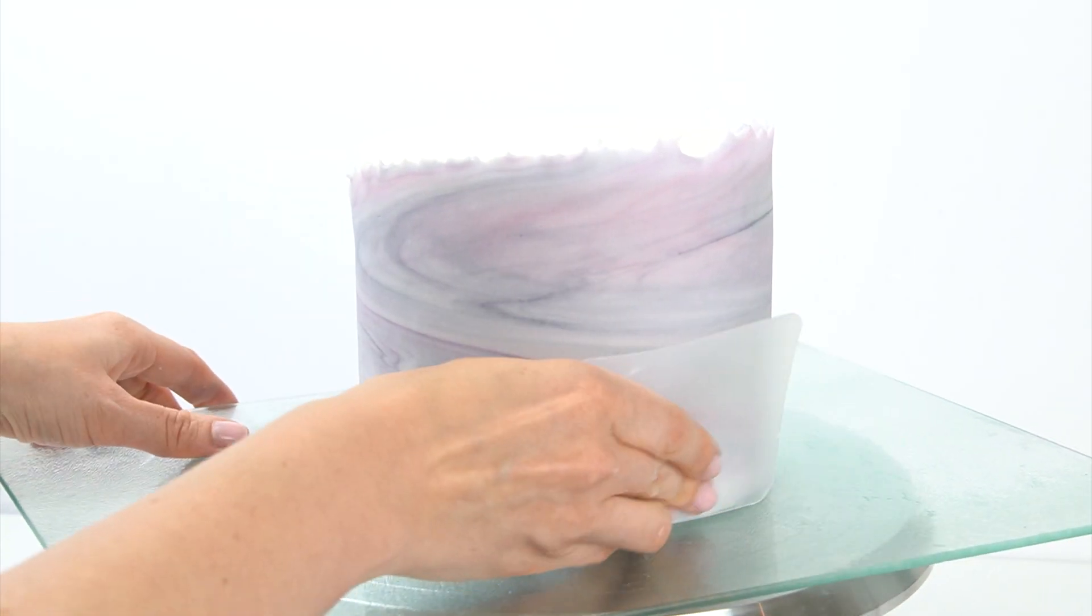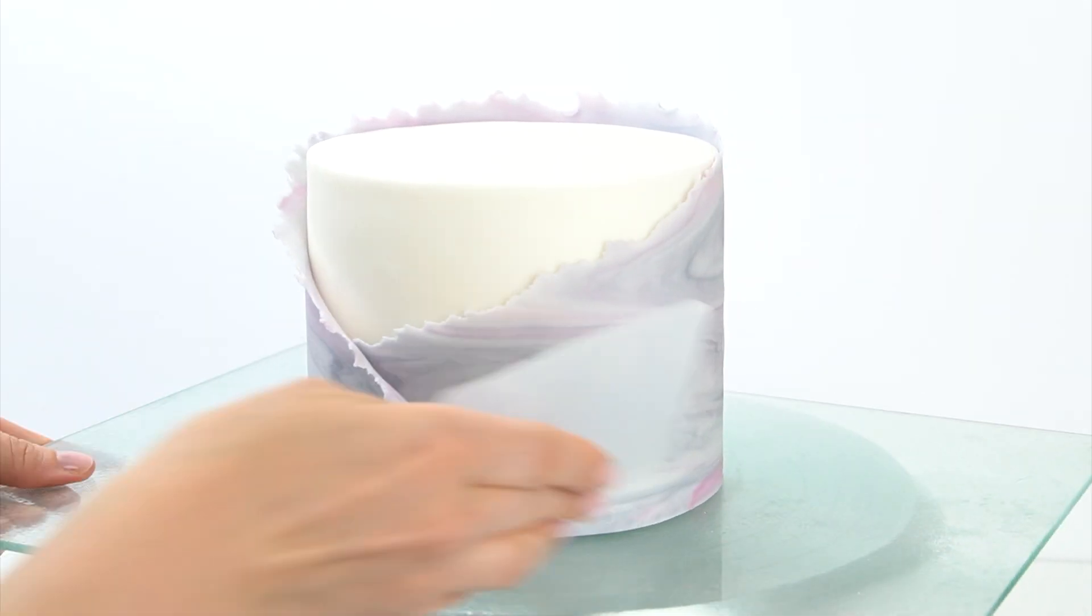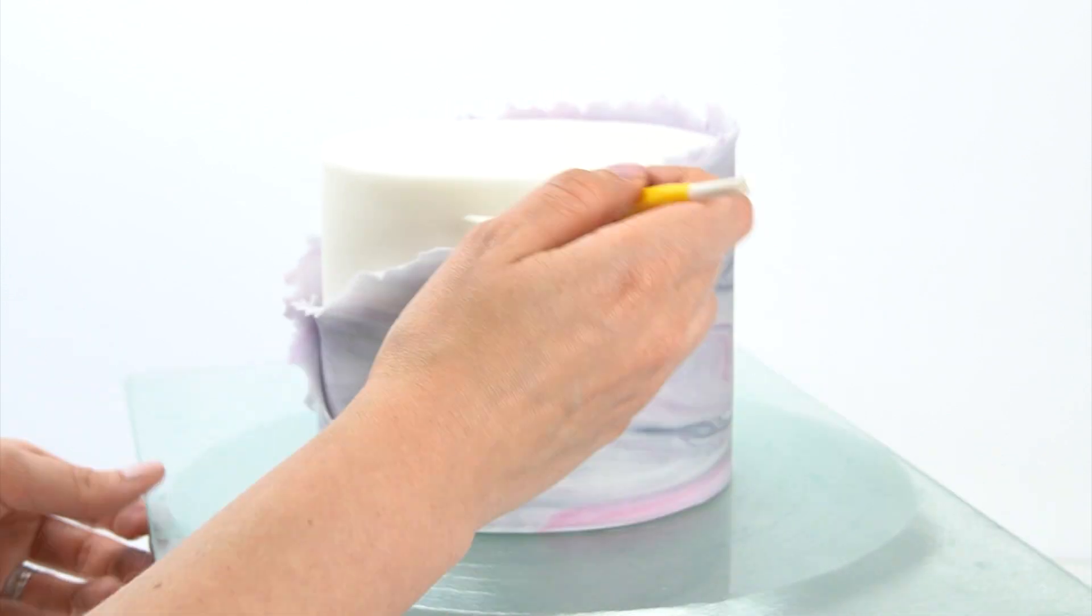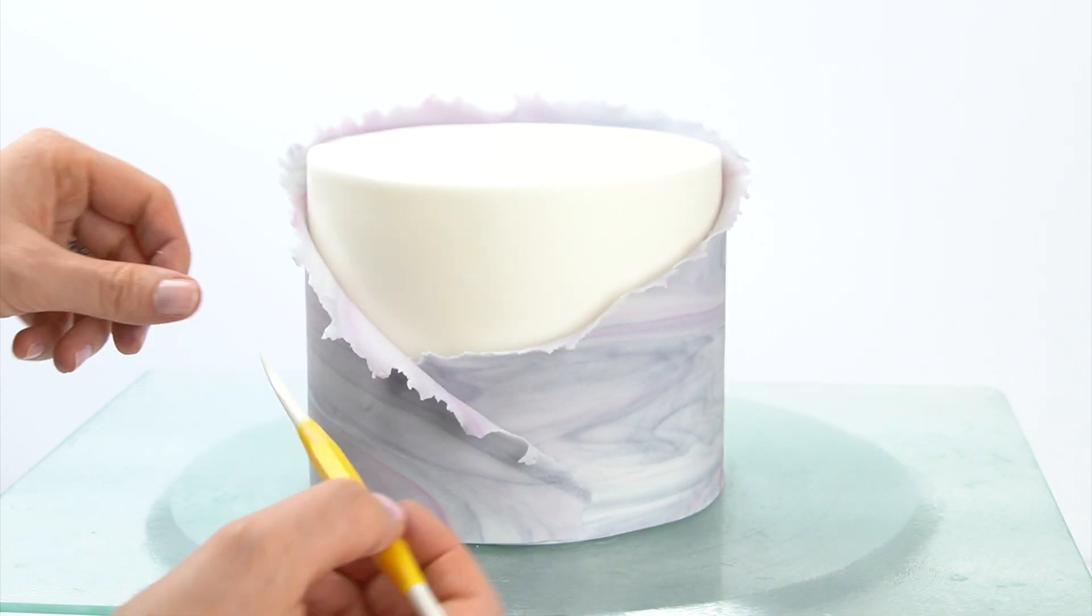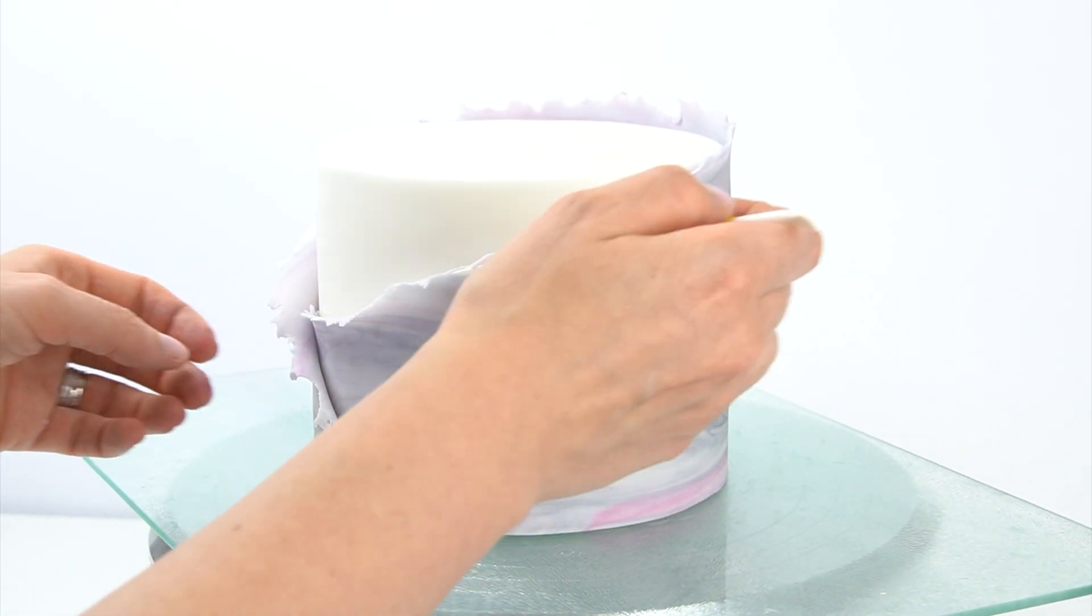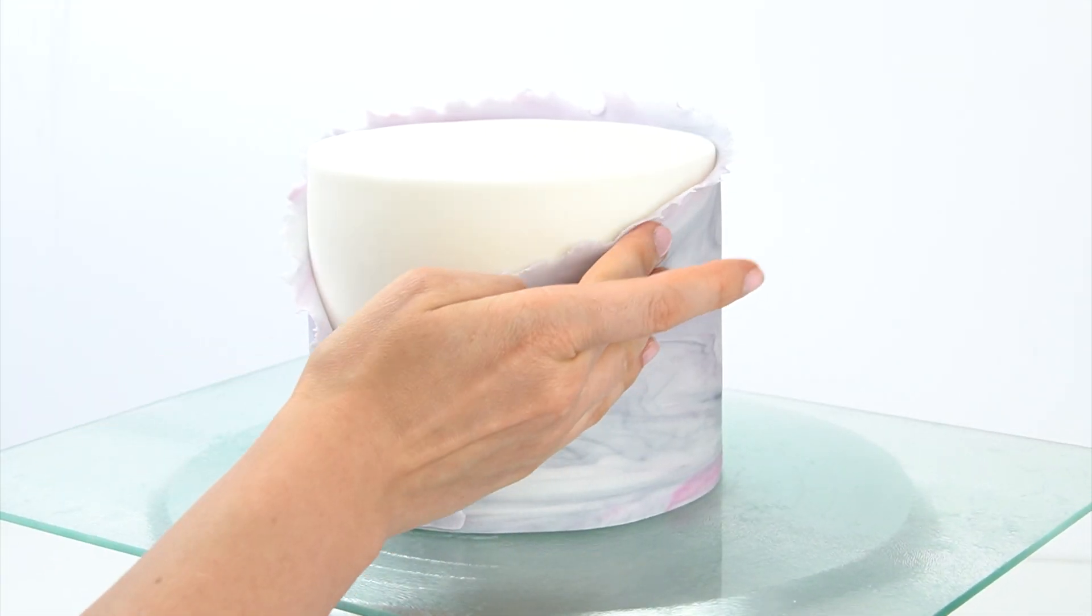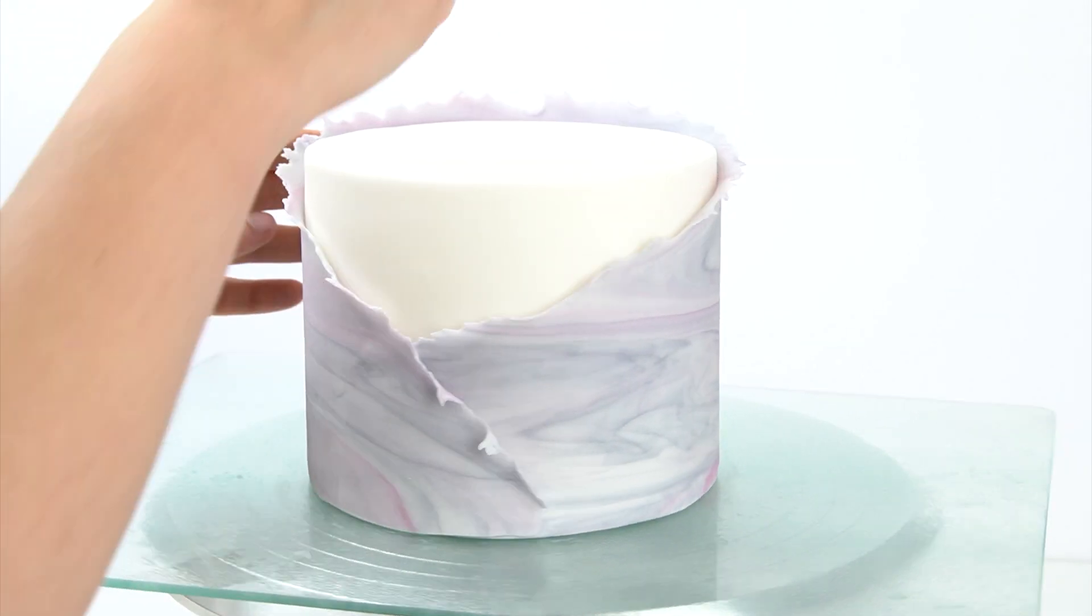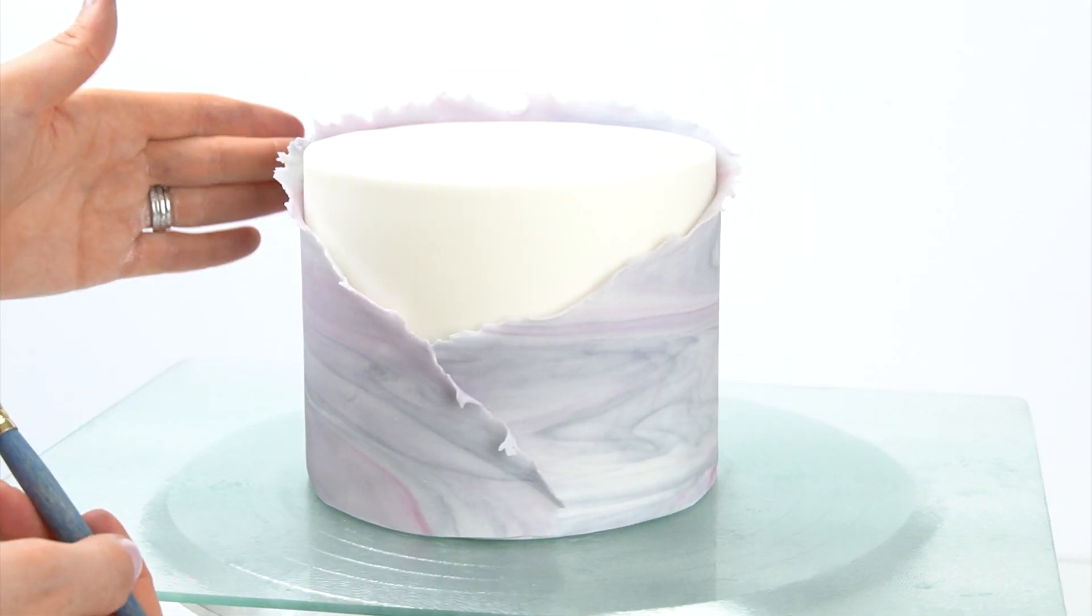I can then go in with my flexi smoother, pushing the bottom of that fondant onto the cake. You could have this flush to the cake or you could go in with your dressing tool just pulling some of that back so it looks like it's peeling away from the cake. If there's any areas that at this point you just want to tear into a little bit more, you can do that. The bit around the back that's coming above the cake, you just want to make sure that's stuck all the way to the top.